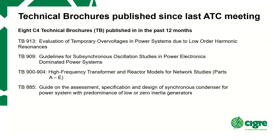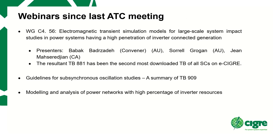We have had eight technical brochures published in the past 12 months — the first one is divided into parts A, B, C, D, etc. Alex mentioned 24 published brochures total for the past 12 months, so one third coming from C4 is quite good.